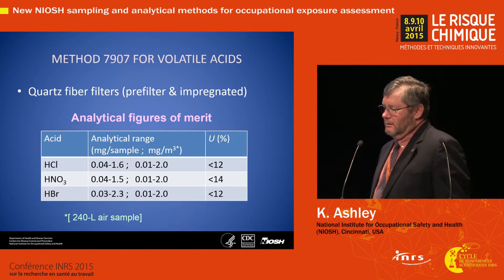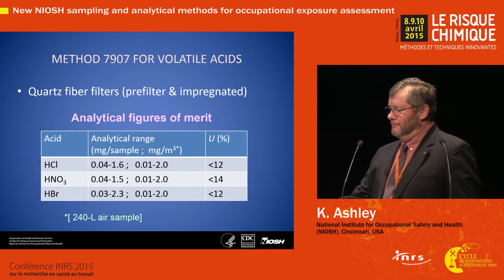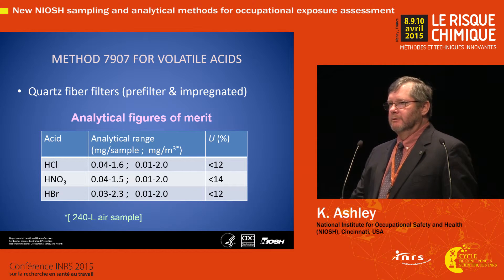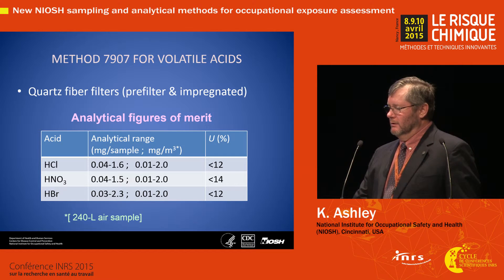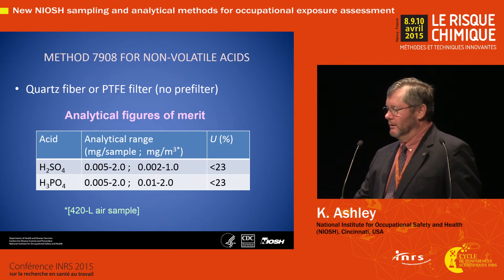For volatile inorganic acids, the method also entails a pre-filter and an impregnated filter. The pre-filter is simply to filter out any particulate matter that might otherwise interfere with what's collected on the impregnated filter. In this case, for hydrochloric, hydrobromic, and nitric acids, very good analytical figures of merit with low expanded uncertainties are obtained.